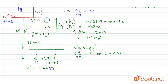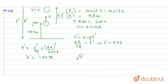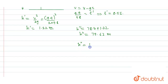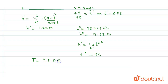The total height from which the combined mass falls is h_double_dash = 78.4 + 1.22 = 79.62 meters. Using h = ½g·t_double_dash²: t_double_dash = 4 seconds. The total time of flight is: 2 seconds (before collision) + 0.5 seconds (upward phase) + 4 seconds (falling to ground) = 6.5 seconds.